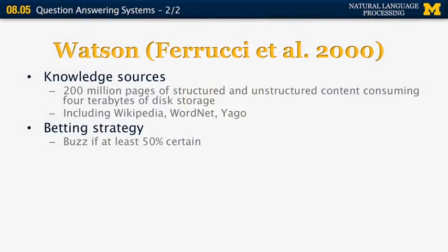One interesting aspect of Watson is its betting strategy. The way Jeopardy works is that you not only have to get the right answer, but you also have to buzz in before everybody else. If you buzz in and get selected, you must answer — and if you get it wrong, you lose points. So if you're really certain of the answer, your best strategy is to buzz in as quickly as possible. If you're not so sure, it may be better to wait, let somebody else answer and possibly get it wrong, then be the second one to guess correctly. The strategy works by associating a confidence with every answer: if you're at least 50% certain, you try to buzz in; if not, you wait.